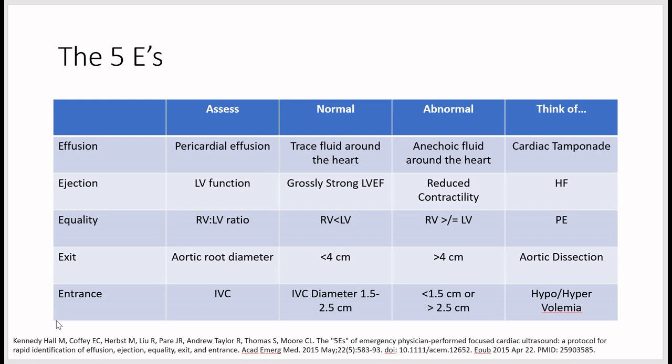For exit, assess blood exiting the heart by measuring the aortic root diameter. Less than 4 cm is normal; greater than 4 cm is abnormal. A dilated aortic root with pericardial effusion should raise concern for aortic dissection.